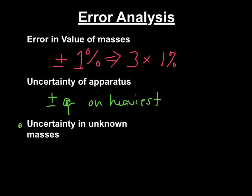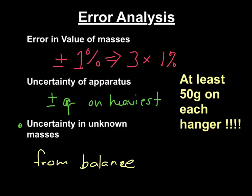Then you have an uncertainty in the unknown masses, and you get this from the balance. You're going to read this balance incredibly close. One final point: have at least 50 grams on each hanger. This will minimize the amount of error for this second source over here, because you'll have one part in 50 as opposed to one part in three.